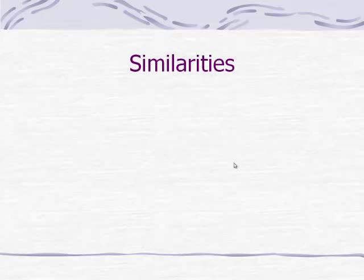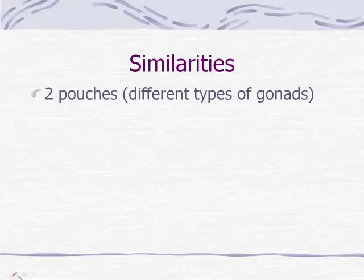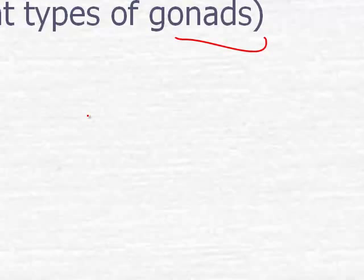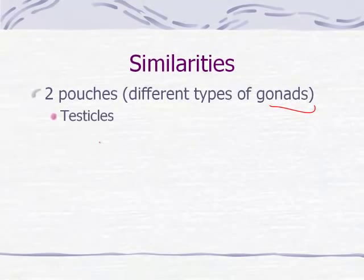When we talk about males and females, we're first going to talk about the similarities between the male and female reproductive systems. Essentially, there are two pouches that contain these different types of gonads. The term gonad is a scientific term meaning the reproductive structures that produce the sperm and the egg in males and females respectively. Males have two testicles that hold and produce sperm, whereas females have two pouches - the ovaries - that hold and produce the eggs.